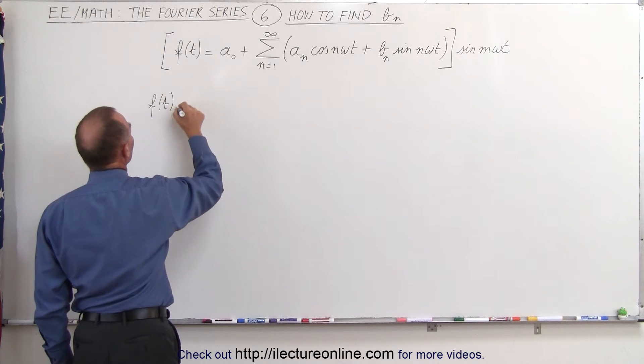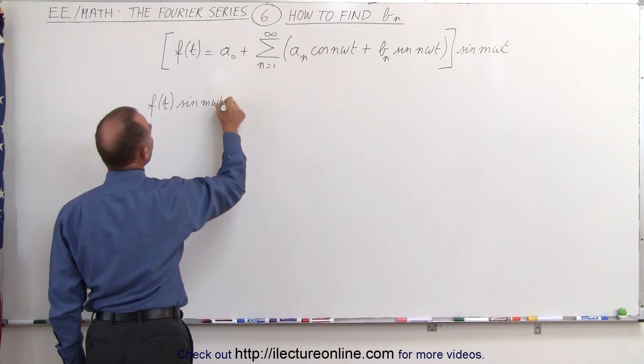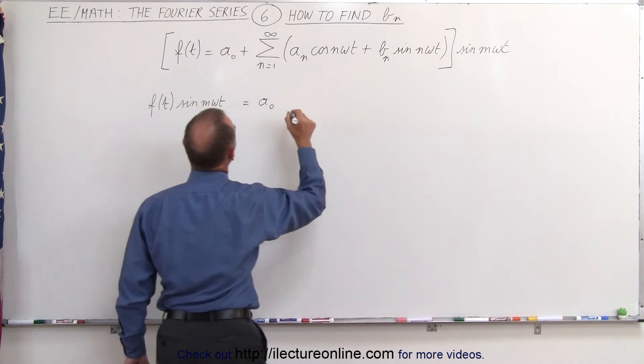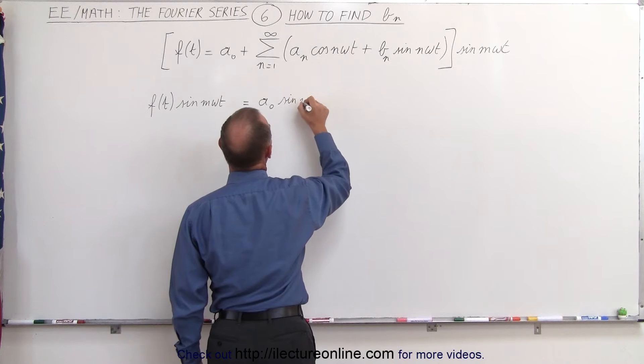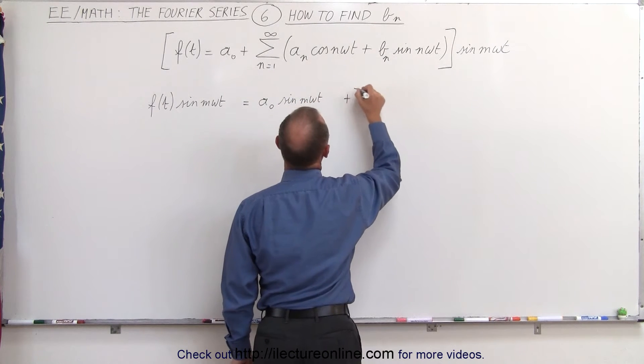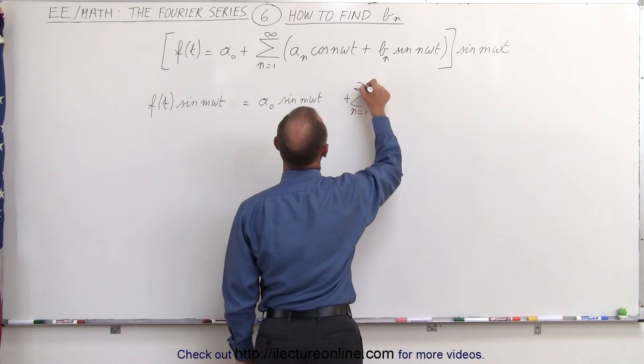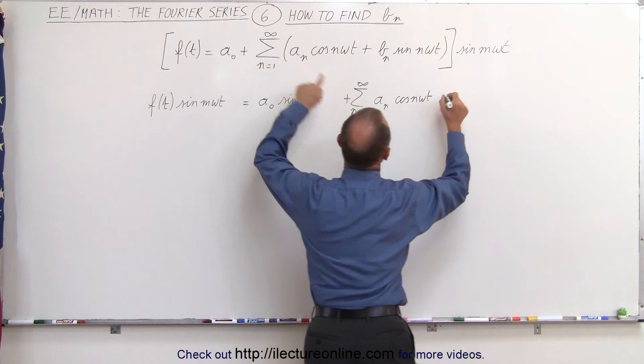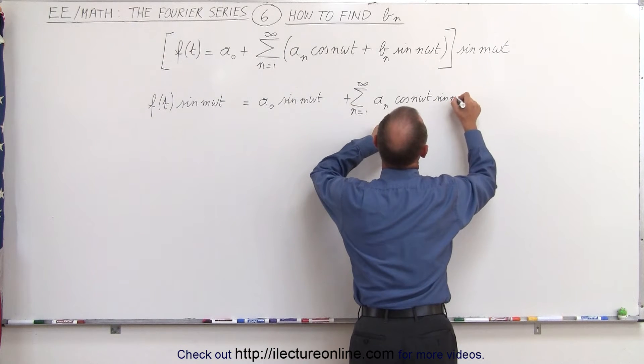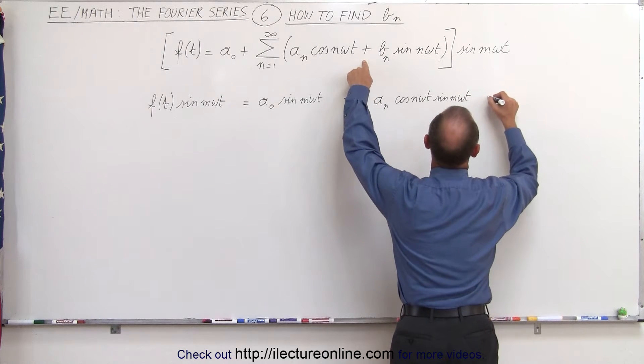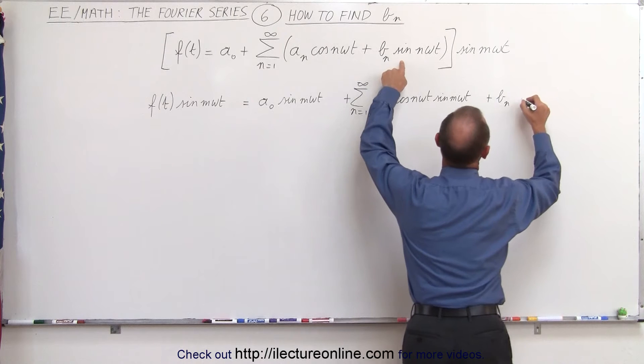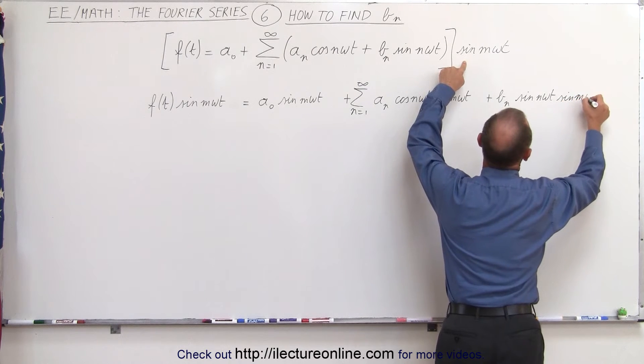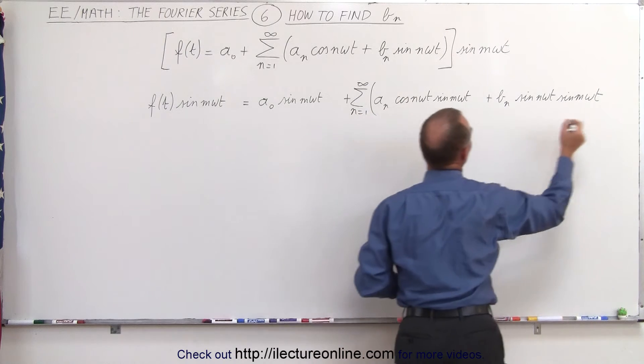We get f of t times the sine of m omega t is equal to, let me leave a little room here, a sub 0 times the sine of m omega t, and then plus the infinite sum from n equals 1 to infinity. Here we get a sub n times the cosine of n omega t times the sine of m omega t, and then that would be plus b sub n times the sine of n omega t times the sine of m omega t. Of course, we want both of these sums, so we can put parentheses around it like this.